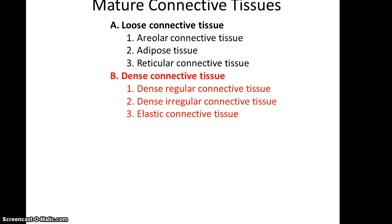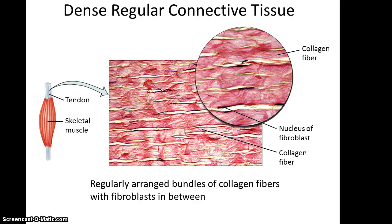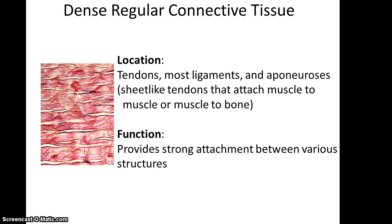Next is dense connective tissue, including dense regular, dense irregular, and elastic connective tissue. Dense regular connective tissue has large bundles of collagen fibers arranged going in one direction — you can see big pink areas moving in the same direction, with fibroblasts appearing as little white strips with dark nuclei in between. Its locations include tendons, most ligaments, and aponeuroses, which are sheet-like tendons that attach muscle to muscle or muscle to bone. Its function is to provide strong attachments between various structures, resisting forces when skeletal muscles contract to allow bone movement.